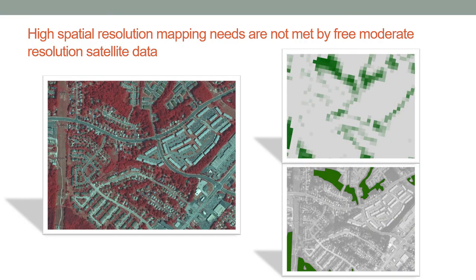This slide highlights the fact that high spatial resolution mapping needs are not met by the free moderate resolution satellite data that is easily available to us. Moderate resolution is about 10 meters to 30 meters — 10 meters for Sentinel, 30 meters for Landsat — and that is not sufficient to do, for example, urban mapping, where you want to map the roads and subdivisions and so on.